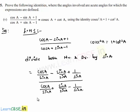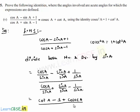This simplifies to (cot a - 1 + cosec a) / (cot a + 1 - cosec a), since cos a / sin a = cot a and 1 / sin a = cosec a.